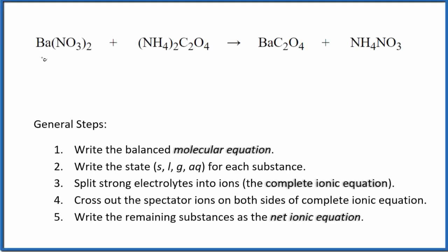Let's write the balanced net ionic equation for barium nitrate plus ammonium oxalate. The first thing we need to do is balance our molecular equation. I can see that I have two ammonium ions here and just one here, so I'll put a two in front of the ammonium nitrate.